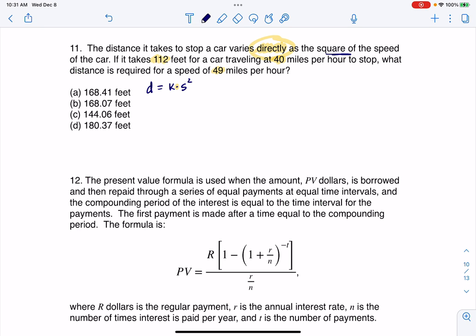And if I talk about the complete ordered pair, it says when you were going 40 miles an hour, it took you 112 feet to stop. I'm going to plug that set of information in. So I know that it took me 112 feet to stop when I was going 40 miles an hour. This allows me to solve for K.